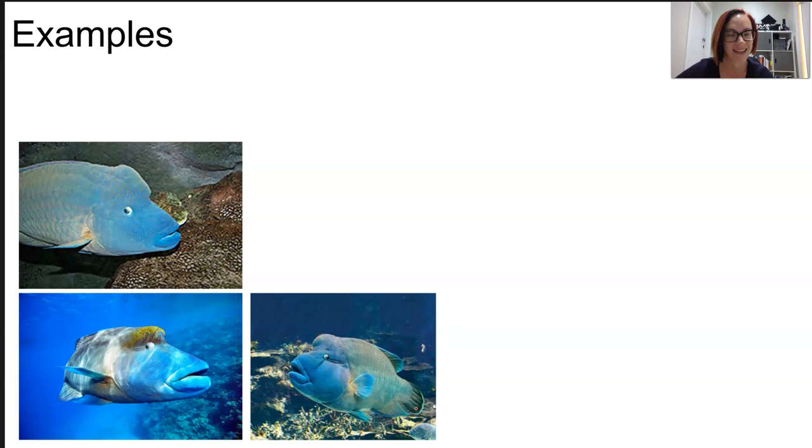The humphead wrasse is another strange looking fish that looks like you've caught it doing something really suspicious. It's an opportunistic predator, and it eats crown of thorn starfish. Now, the crown of thorn starfish actually eat coral. So these fish keep that in check. So they don't eat all the coral in a community.